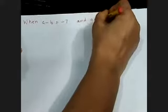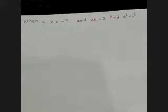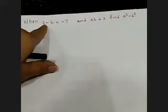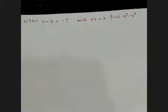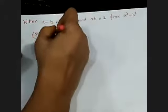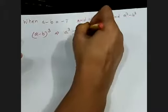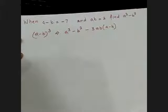The next question: A minus B equals minus 7, and AB equals P. Find A cube minus B cube. To find the value of A cube minus B cube, you will use the identity A minus B whole cube equals A cube minus B cube minus 3AB in the bracket A minus B.